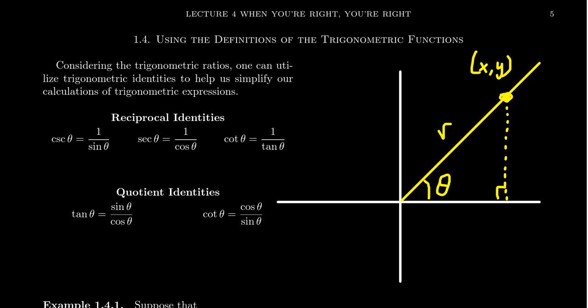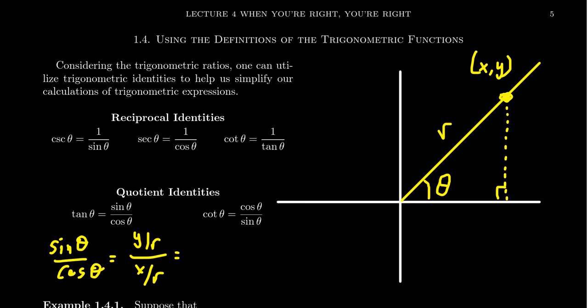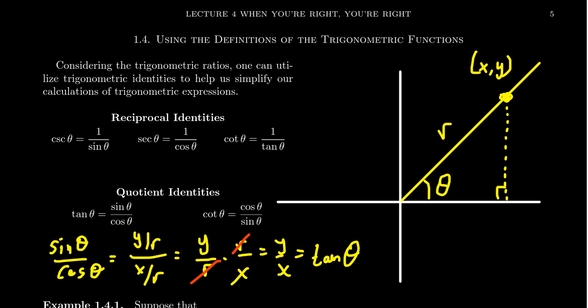Two other trigonometric identities I want to introduce are the two quotient identities. If we take sine theta divided by cosine theta, this looks like y over r divided by x over r. Dividing a fraction by a fraction means multiplying by the reciprocal: y over r times r over x. The r on top and bottom cancel out, giving us the simpler ratio y over x. This is none other than the tangent ratio, so sine theta divided by cosine theta equals tangent theta — tangent equals sine over cosine.